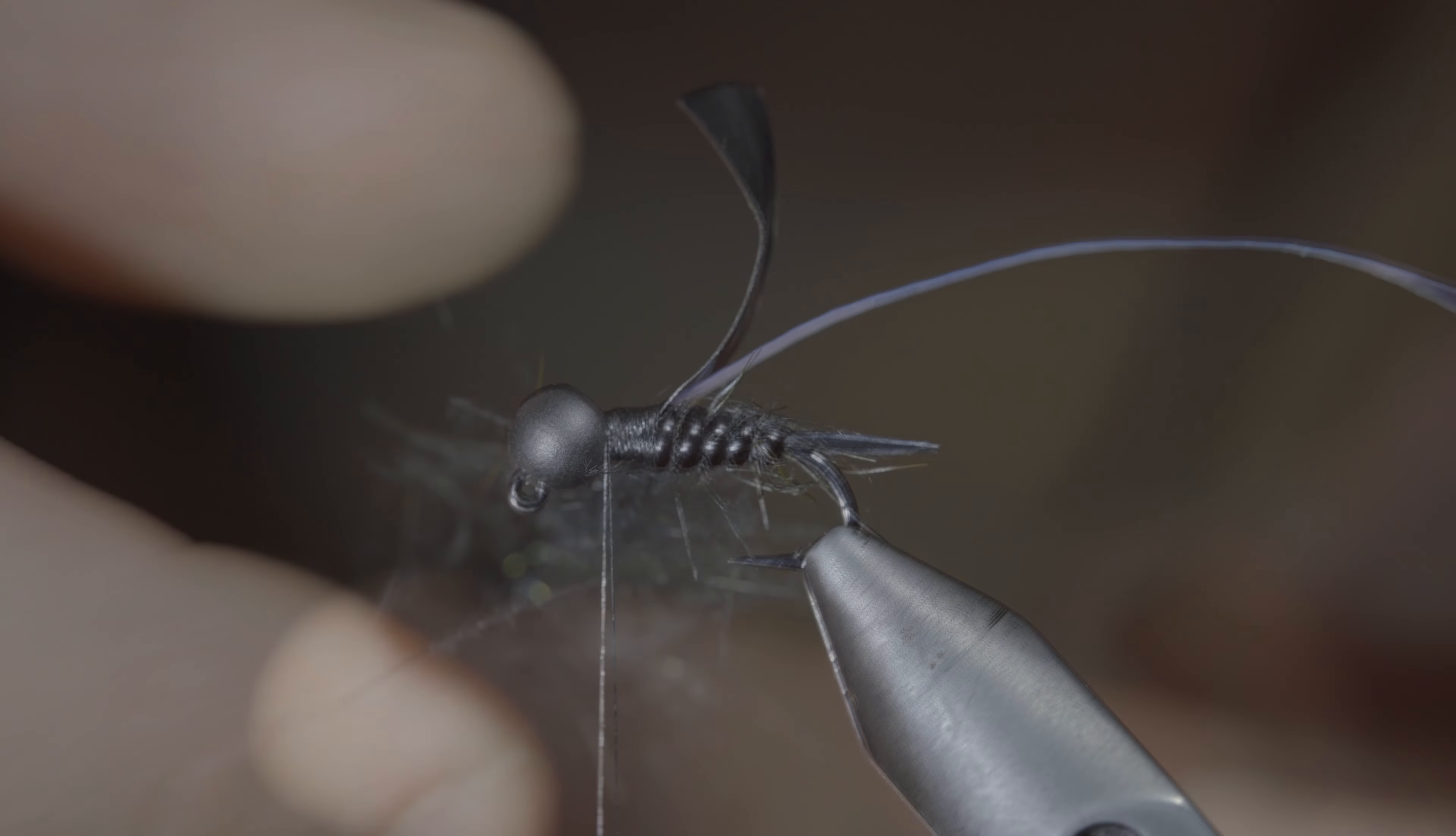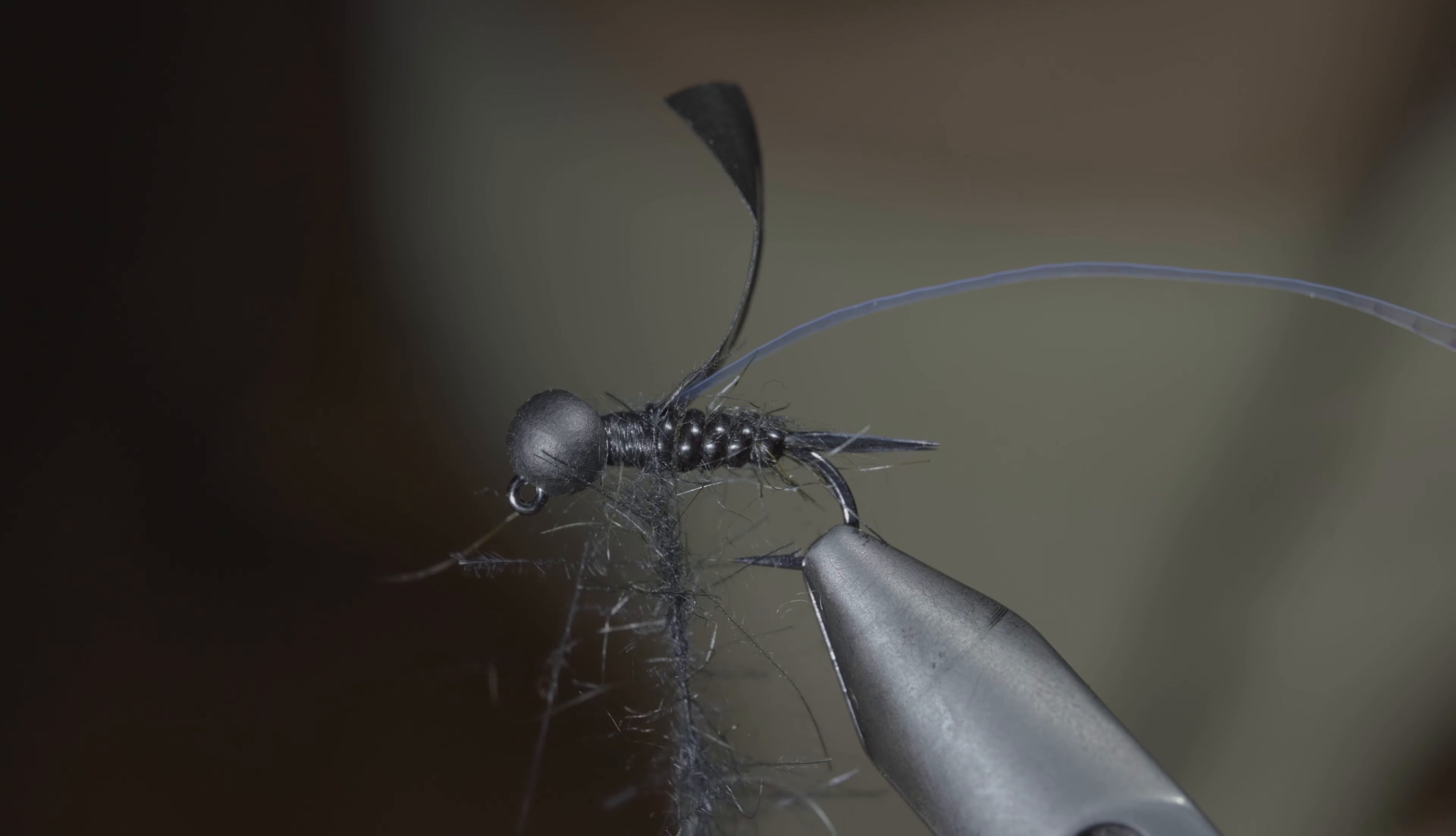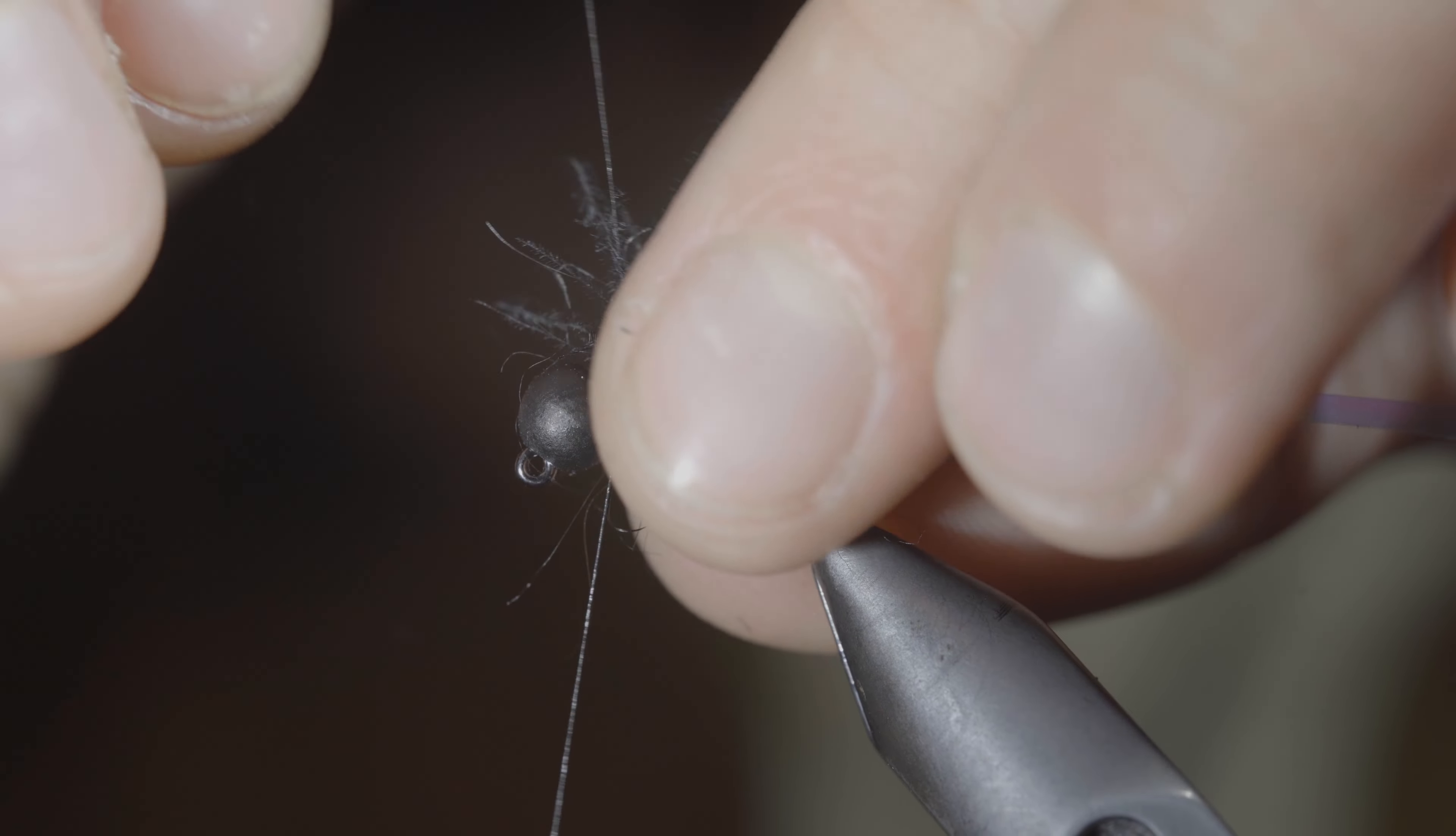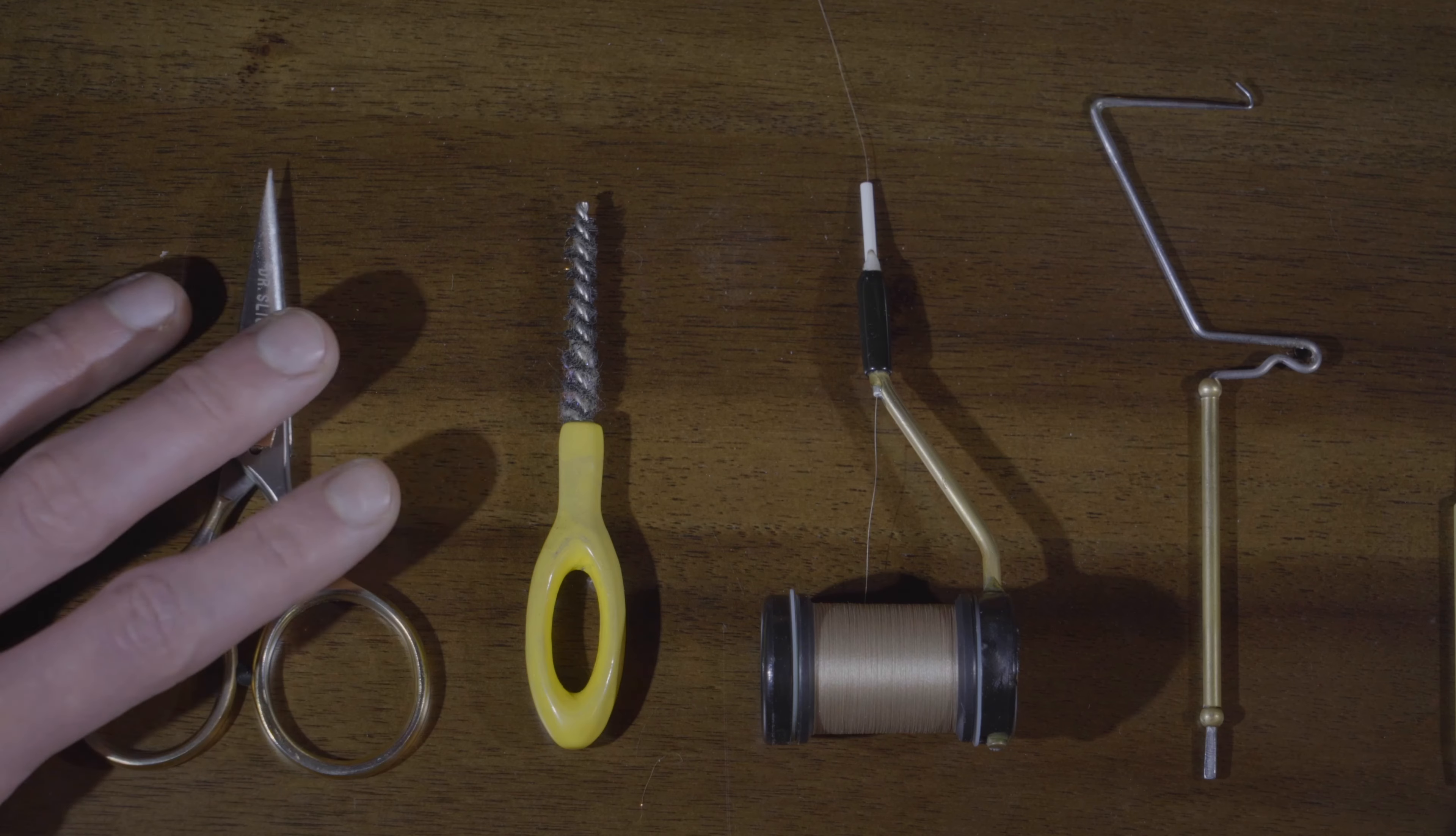With this complete, we'll grab some black CDC, inserting it into our dubbing loop along with some of our black hare's ear, spin it up and begin wrapping it forward in close touching spirals. Brushing it back between each wrap and doing so until we reach our thread.